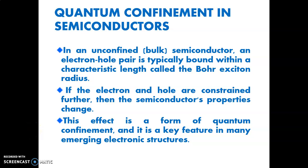Good morning students. In this video we are going to see quantum confinement in semiconductors. We already saw the definitions and formations of quantum dots. Today we are going to see semiconductor quantum confinement. In an unconfined, that means bulk semiconductor, an electron-hole pair is typically bound within a characteristic length called the Bohr exciton radius.